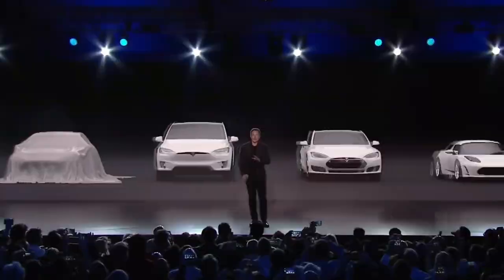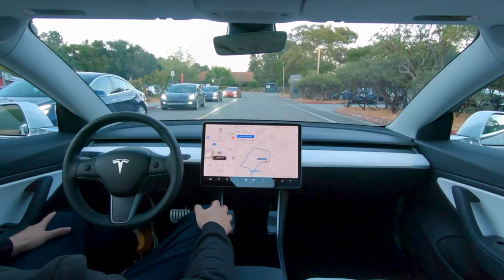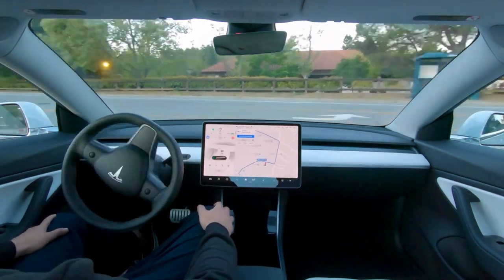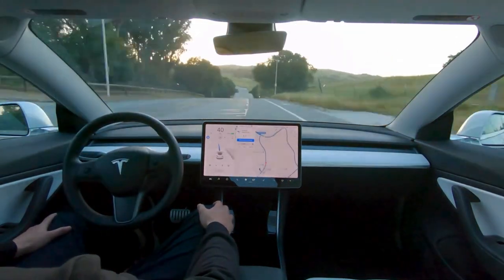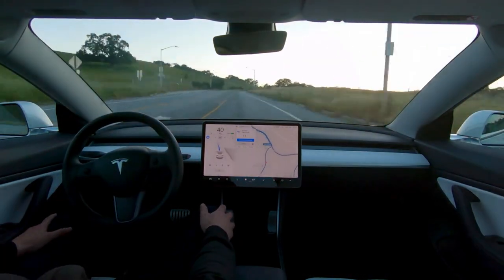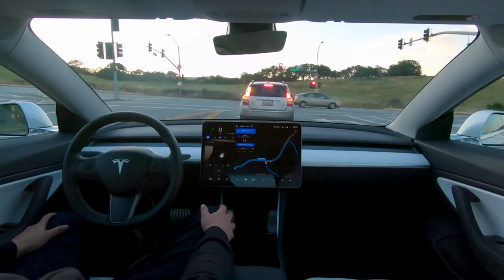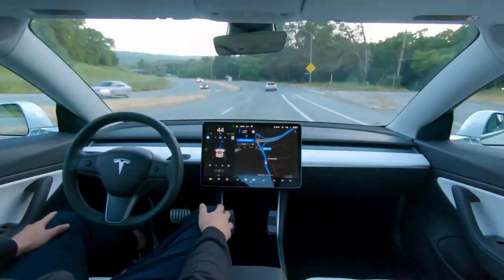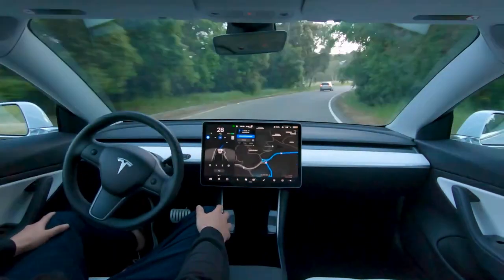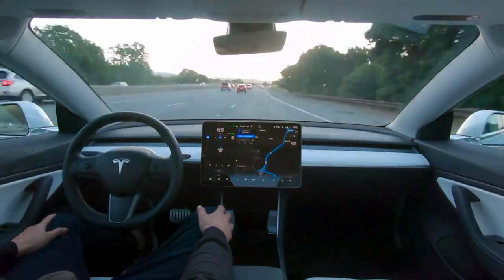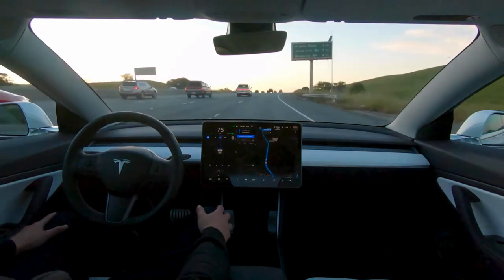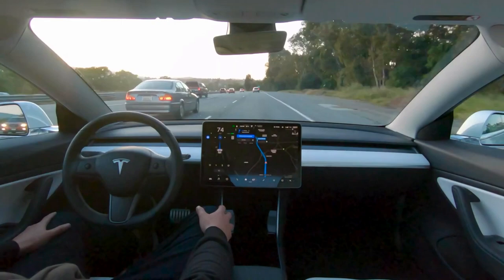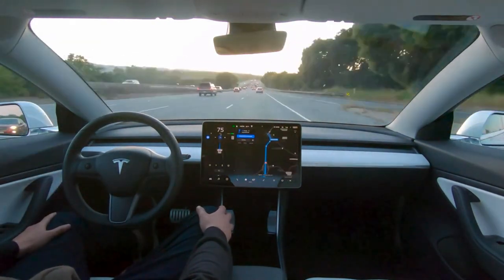3. Tesla – Electrifying the Automotive Industry. Joining Tesla in 2004 and now leading the company as CEO, Musk has spearheaded the electric vehicle (EV) revolution. Tesla's innovative electric cars have disrupted the traditional automotive industry, driving the adoption of sustainable transportation. Musk's vision for a sustainable future is embodied in Tesla's EVs, solar panels and energy storage solutions, setting new industry standards for environmental responsibility.